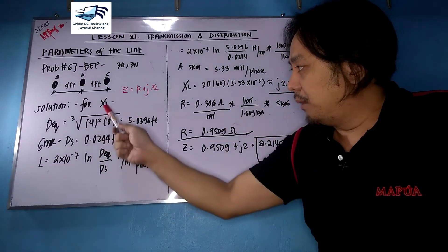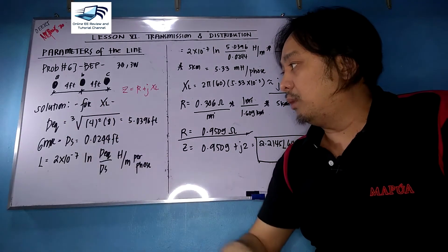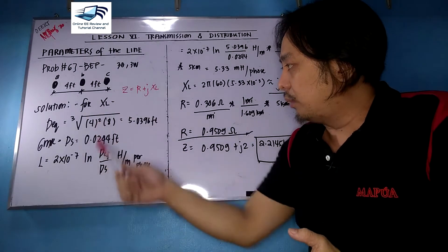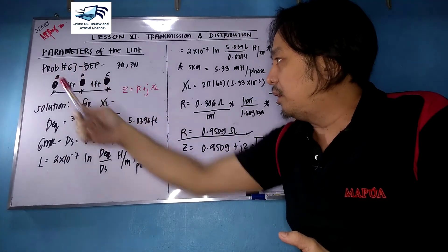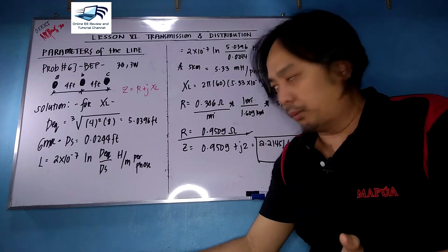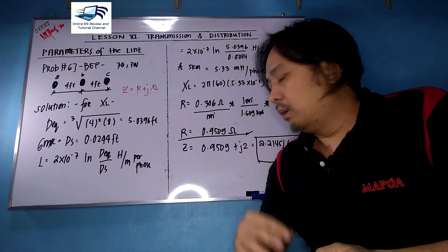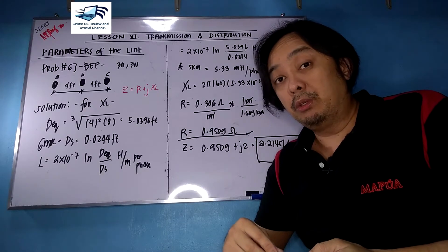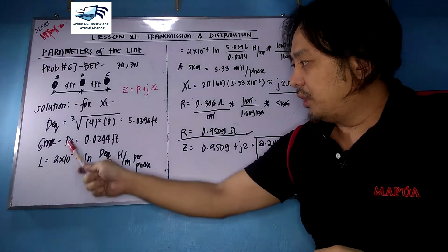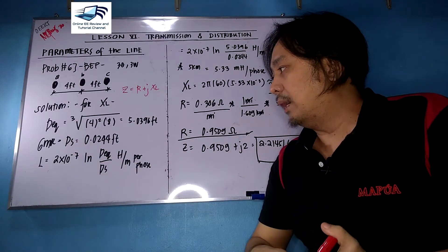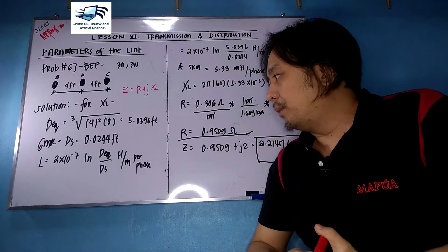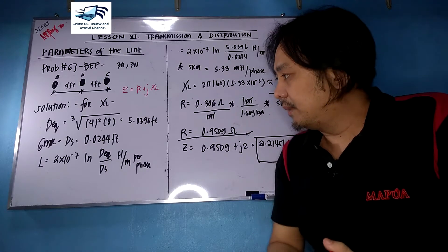To get X_L, we need D_eq. Since conductors A-B and B-C spacings are both four feet, and the A-C return distance is eight feet, D_eq equals the cube root of 4 squared times 8, giving 5.0396 feet. The GMR equals the self-geometric mean distance DS, which is 0.0244 feet.